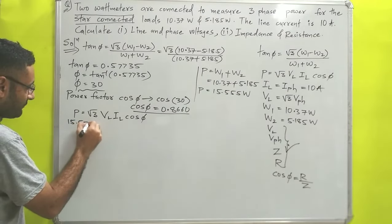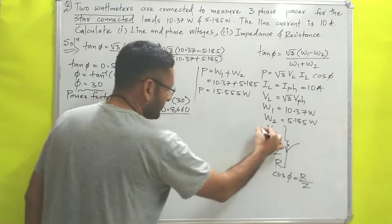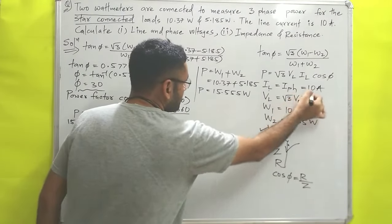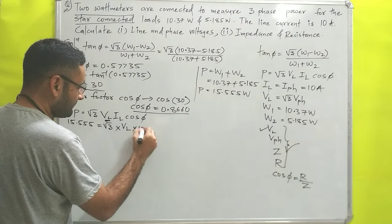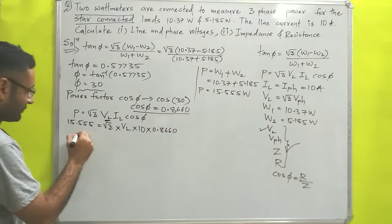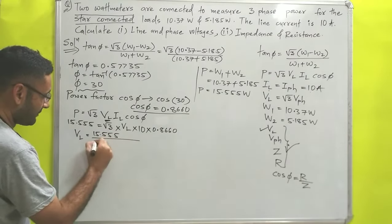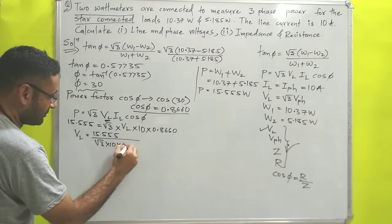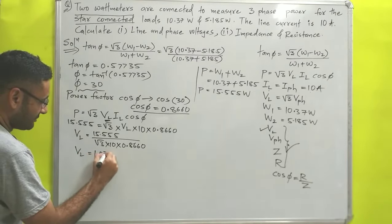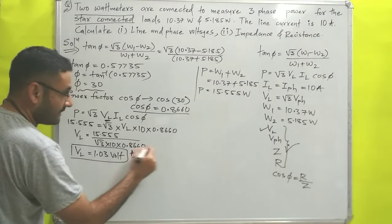Now substituting into the power equation: 15.55 = √3 × VL × IL × cos φ. Here IL = 10 A and cos φ = 0.8660. So VL = 15.55 / (√3 × 10 × 0.8660). Calculating this gives line voltage VL ≈ 1.03 volts. That is answer number one.